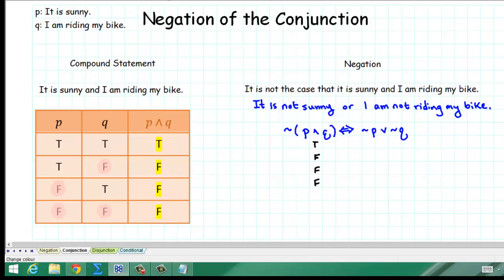false. That comes from the third column of our table here. And then we want to form the negation of that. So, the negation of true is false. The negation of false is true. The negation of false is true. The negation of false is true. So, our answer for the left-hand side is false, true, true, true.